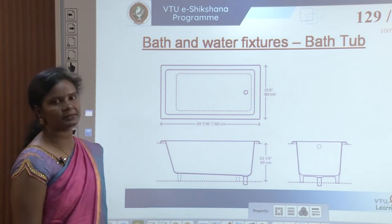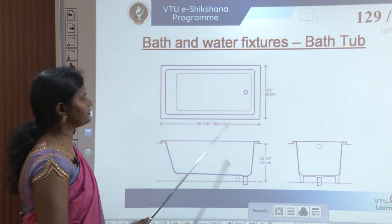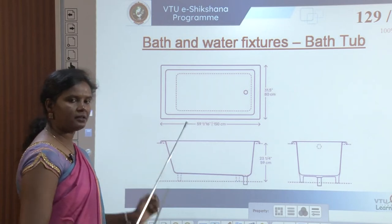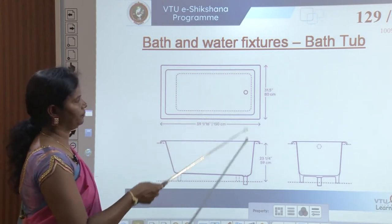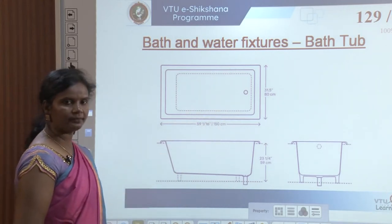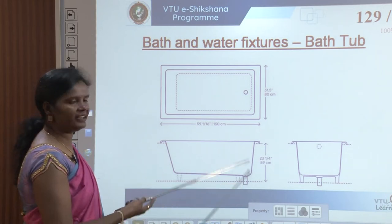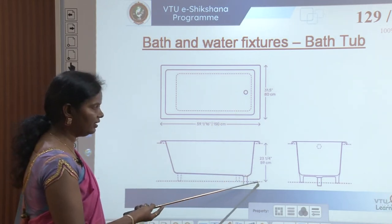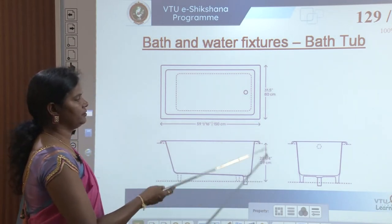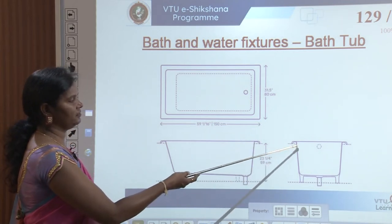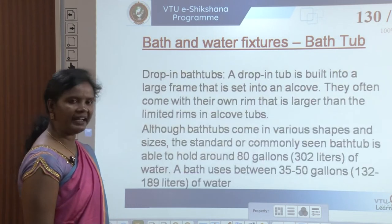The next product is the bath tub. The general dimensions of a bath tub are: width of 150 cm where you can lie down, depth of 80 cm where you can stretch your arms and sit, and height from the floor level is 60 cm (about 2 feet). The rim coming out of the bath tub should be around 59 cm from the floor level.